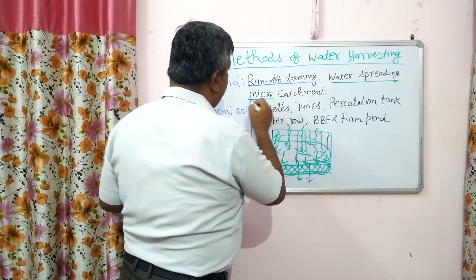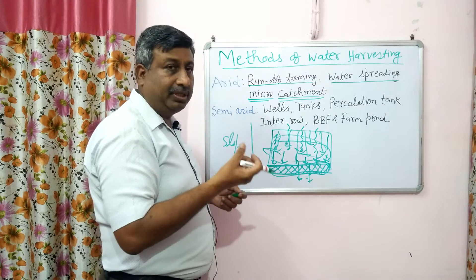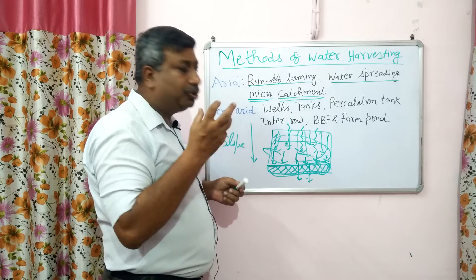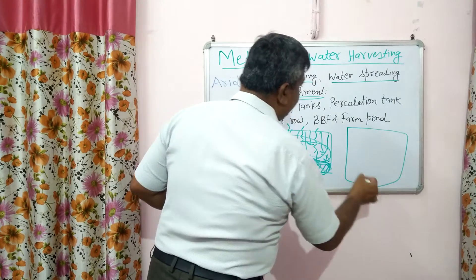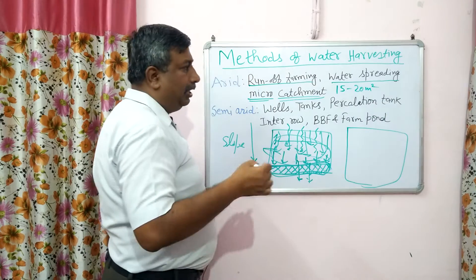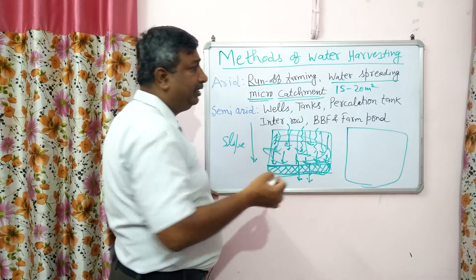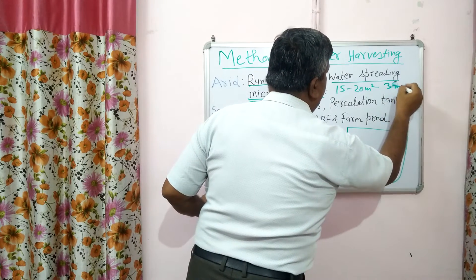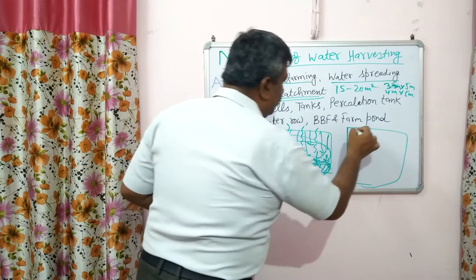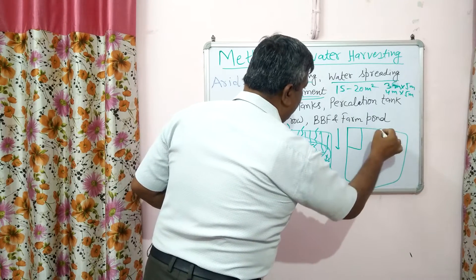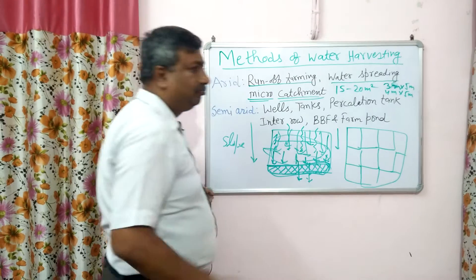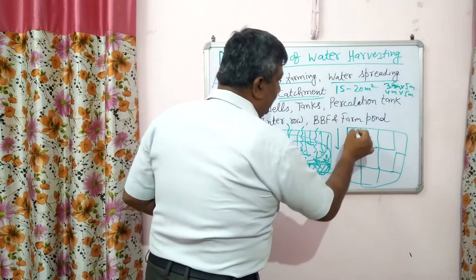Another method is micro catchment. Micro means a small catchment — the area where water is captured and obtained. We make a micro catchment of about 15 to 30 square meters, for example 3×5 or 4×5 meters in area.